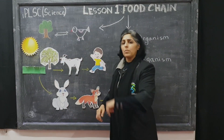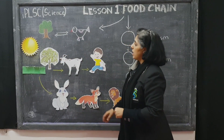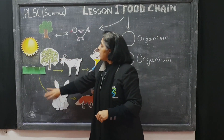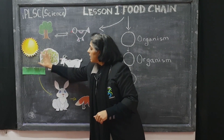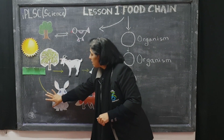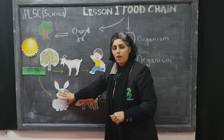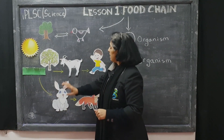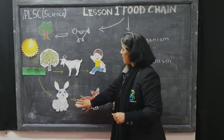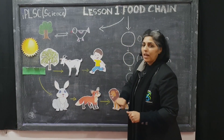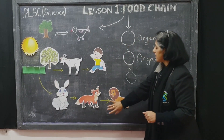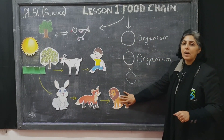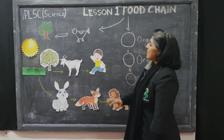Later on the goat is eaten by humans, and there you go, this is your first food chain. Let's talk about the second food chain. Same if you look at the grass and the trees, these are eaten by rabbits. The rabbits are eaten by foxes and the foxes are eaten by lions.